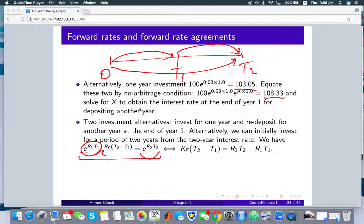rf, which is the forward rate from t1 to t2. Since these are multiplied, you can just sum in the exponential and equate this equation. What is unknown in this equation is the forward rate, so we can solve this equation with respect to the forward rate.